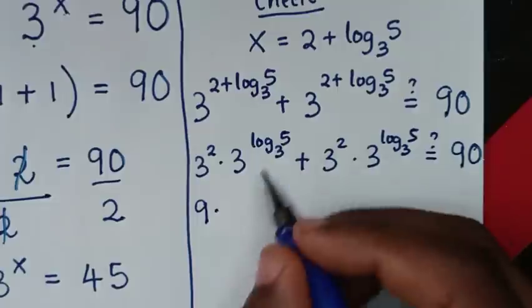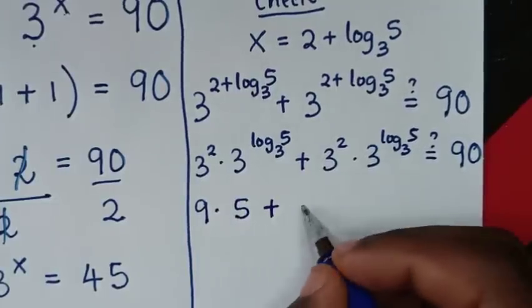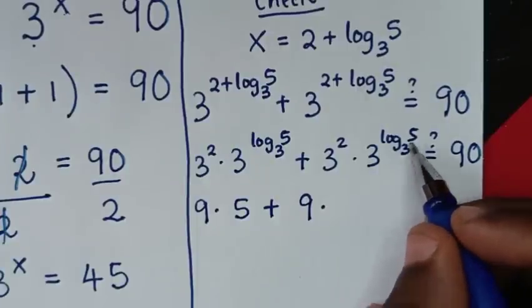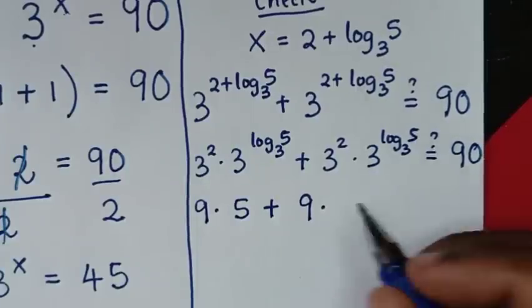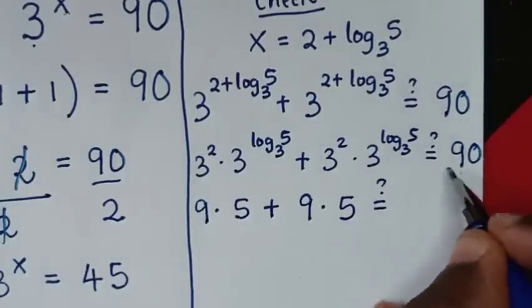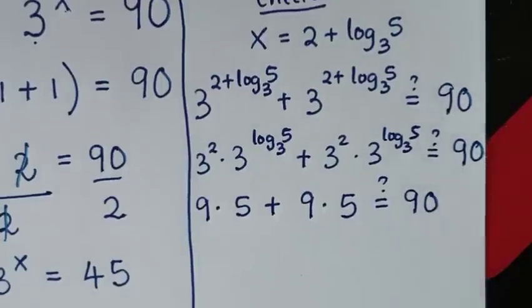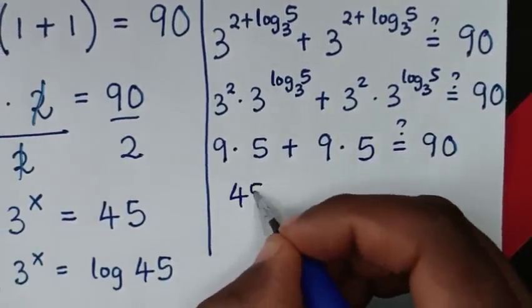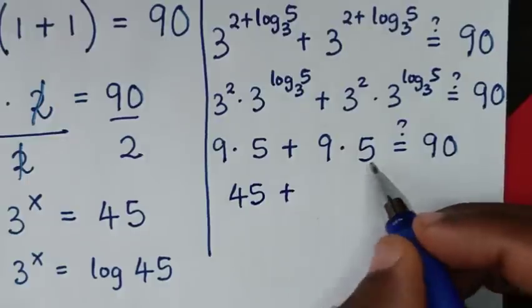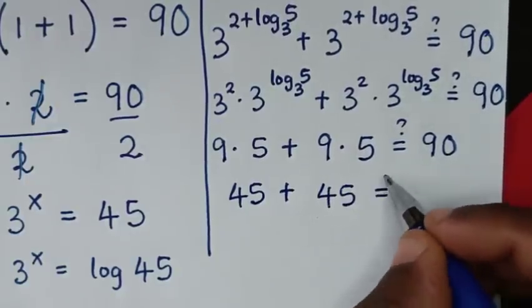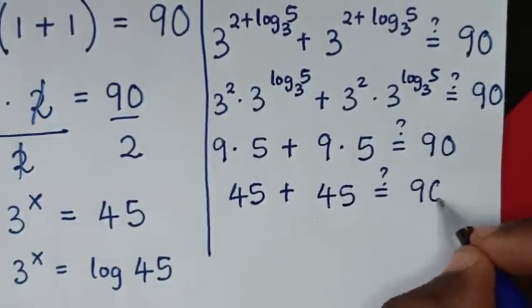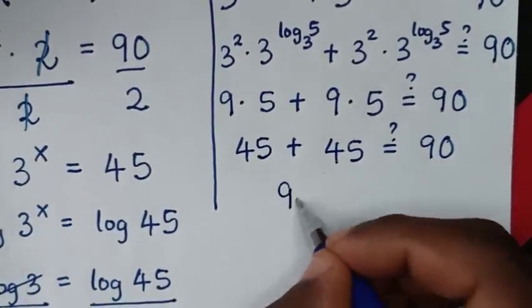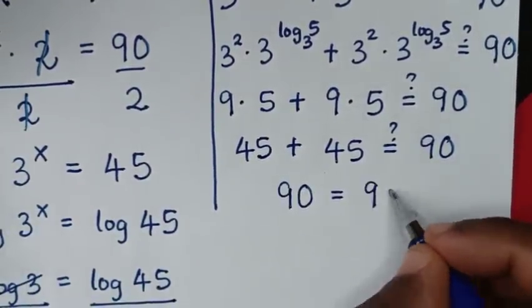3 power of log of 5 base 3 is the same as 5. So here, times 5. Plus 3 squared, which is 9, times 3 power of log of 5 base 3, which is also 5 — times 5. So 9 times 5 is 45, plus 9 times 5 is 45. From 45 plus 45, it is 90, which equals 90.